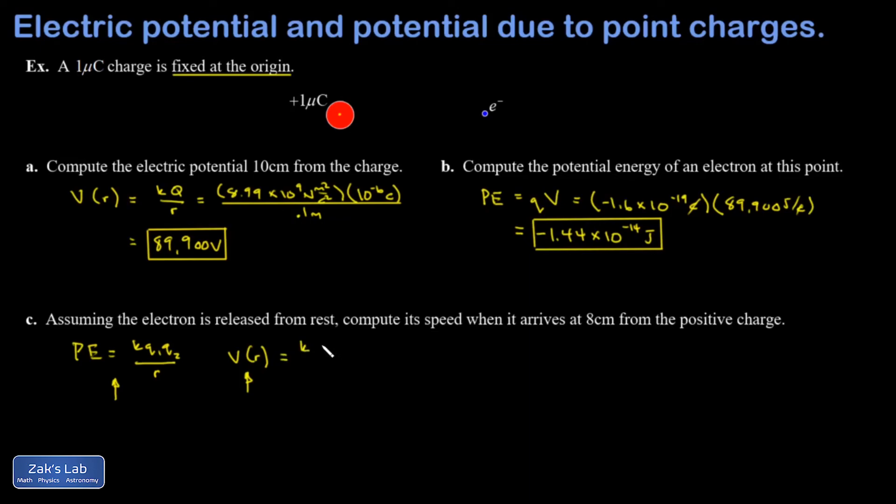So I'm going to get the potential at this new separation distance. All that changes there is the 0.1 got changed to a 0.08. And I end up with a potential of 112,375 volts.